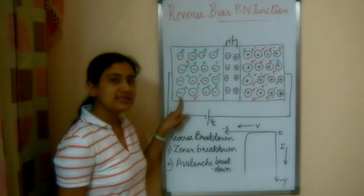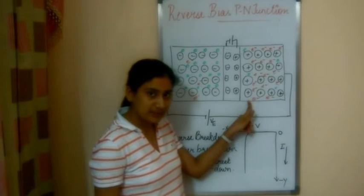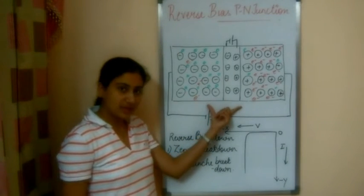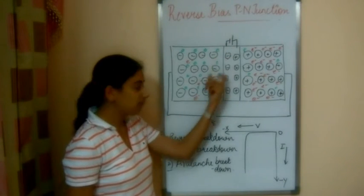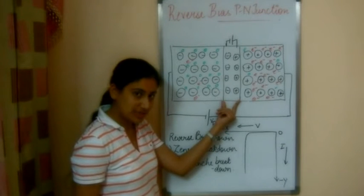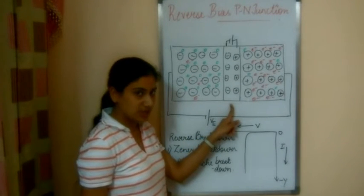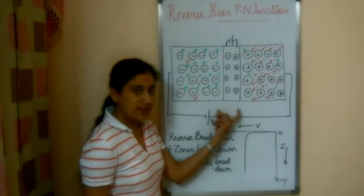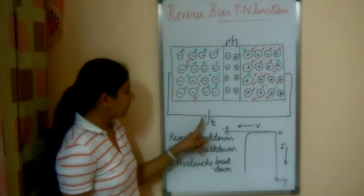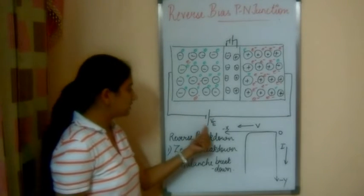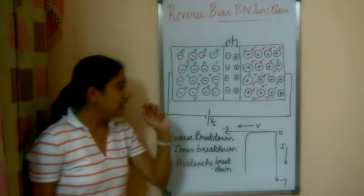This is the representation of the P-type semiconductor and this is the representation of the N-type semiconductor. This is the P-N junction and this is the depletion layer. This is the fictitious battery which is formed because of the uncompensated charges, which is why the depletion layer is also called the space charge region. Now we are reverse biasing it, meaning we are connecting the battery such that the negative terminal is connected to the P-type and the positive terminal is connected to the N-type.